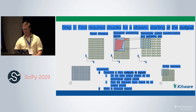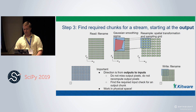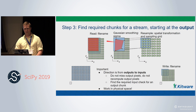Then expand it a little by the domain of your interpolator: a nearest neighbor interpolator doesn't require any extra pixels, a linear one will require one extra pixel, a sinc function will require more depending on the size of your sinc. A lot of the operations we do in imaging are convolutional, so it may mean expanding the size of the input chunk by a few pixels. That determines what we read from disk.